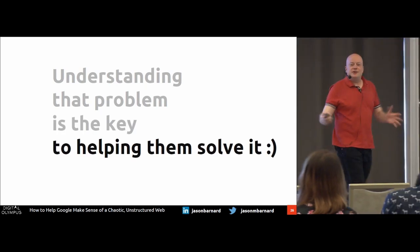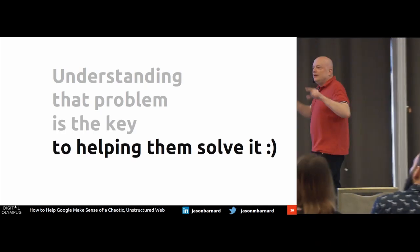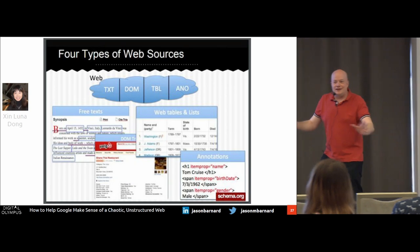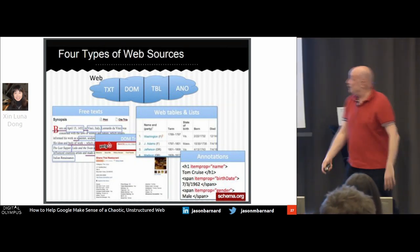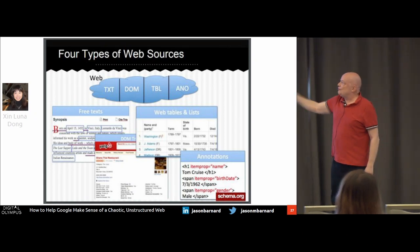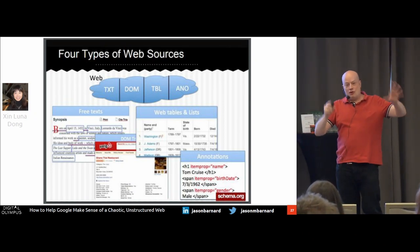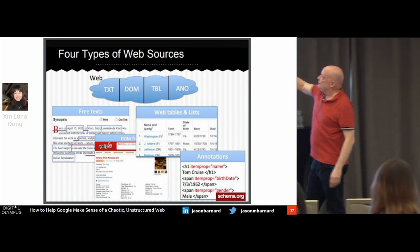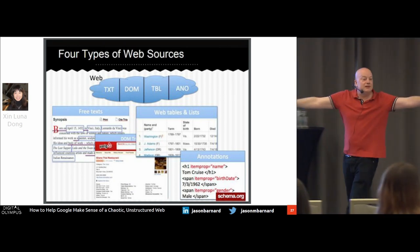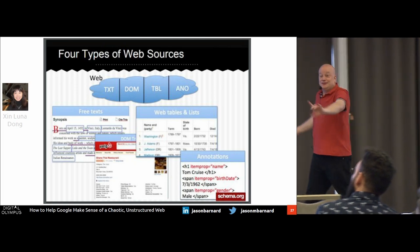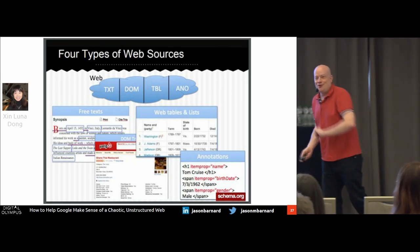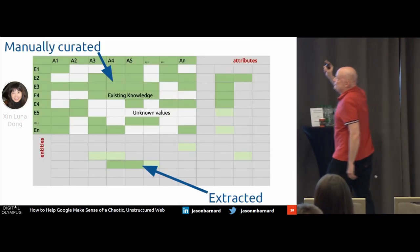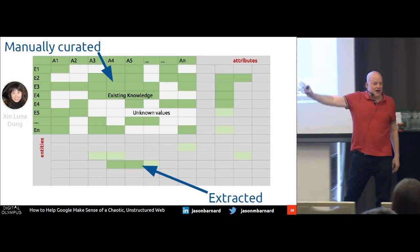Helping them solve it — as with everything, understanding where the problem lies gives the key to the solution. She talks about Google extracting unstructured data — content that Google cannot fact-check for itself easily — through text, DOM, tables, and annotations. What she was trying to do at Google, and what she's now doing at Amazon, is be able to extract this information from the gray areas.